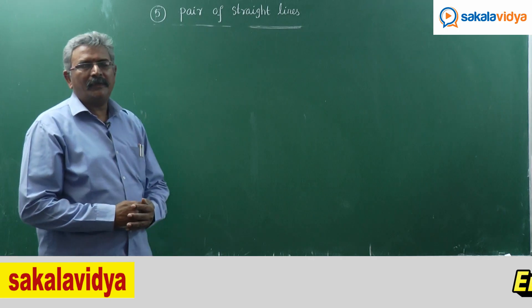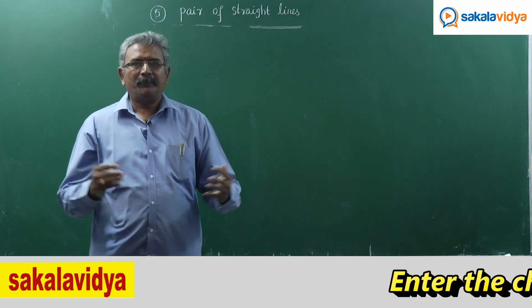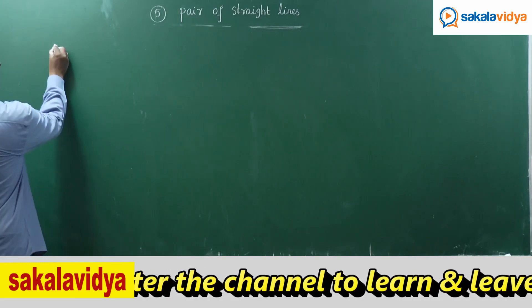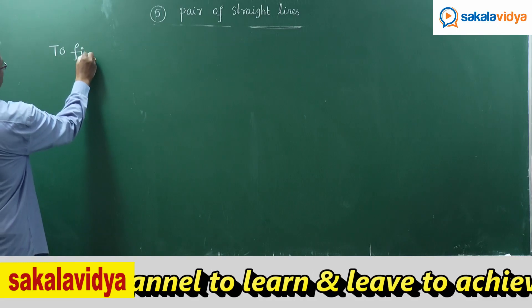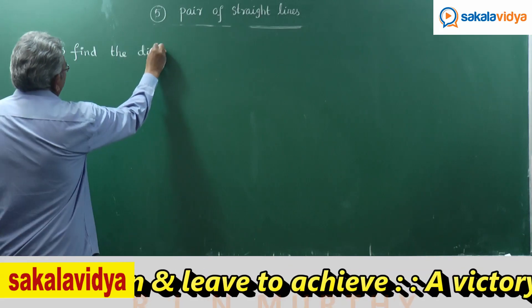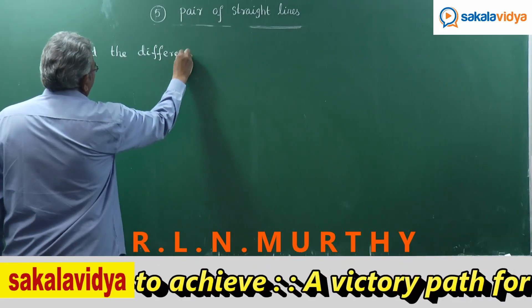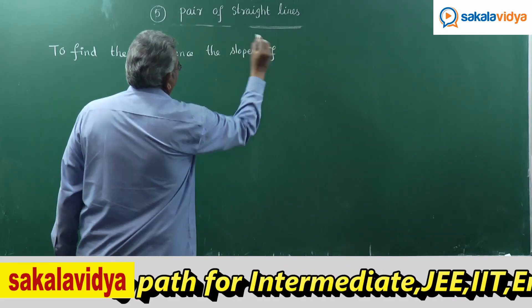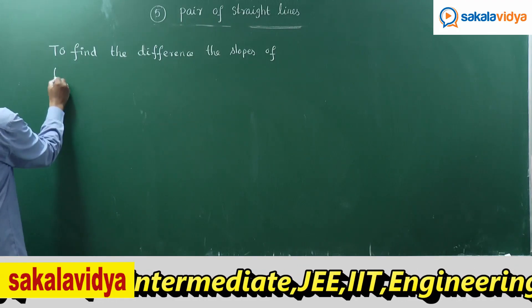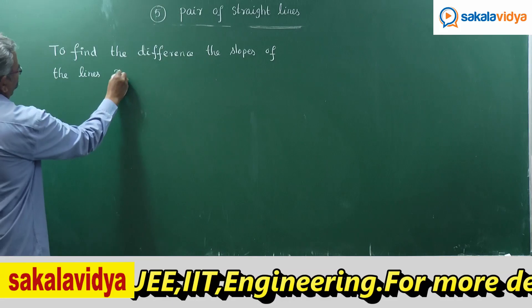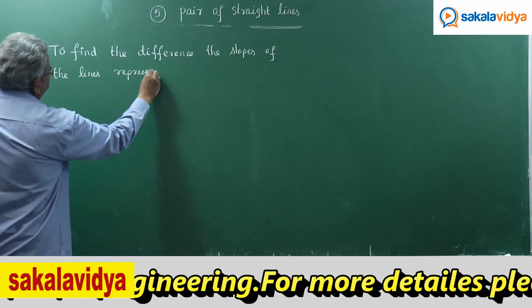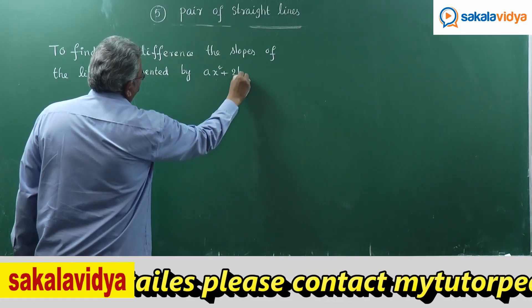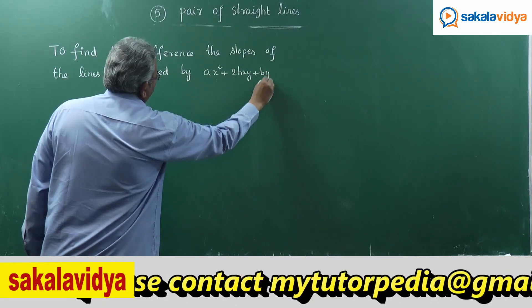Let us find out the difference of the slopes of the lines that are represented by Ax² + 2hxy + By² = 0.